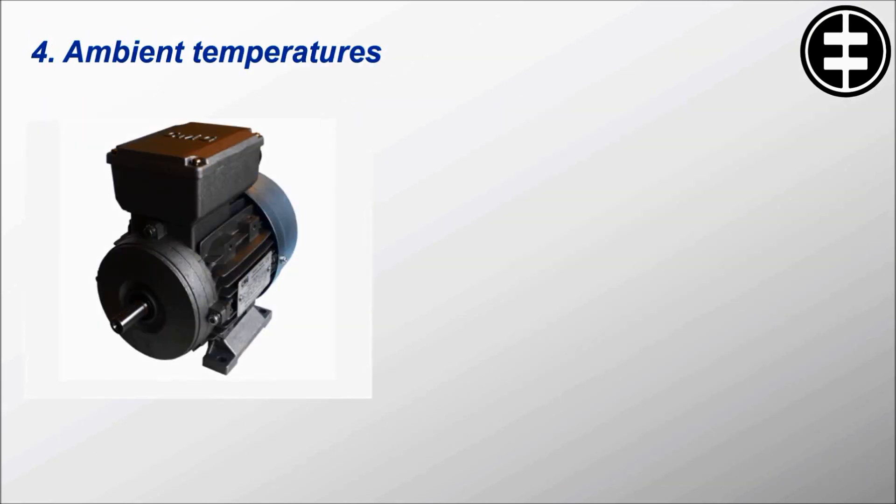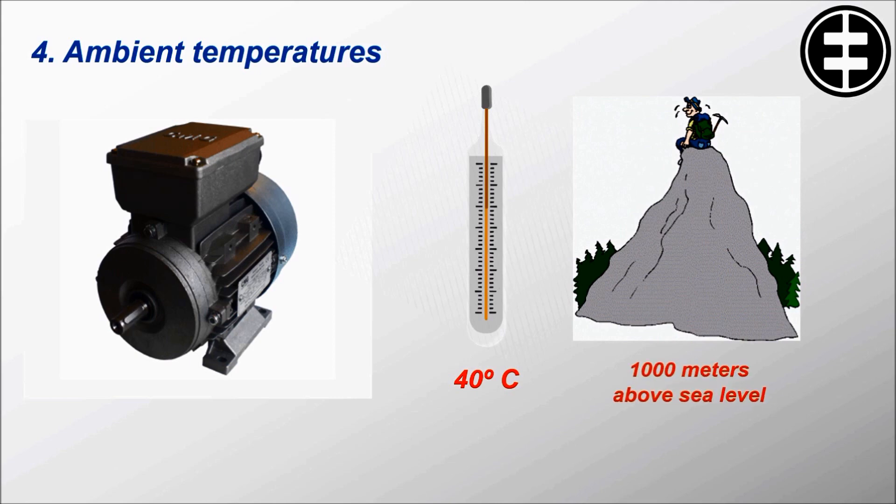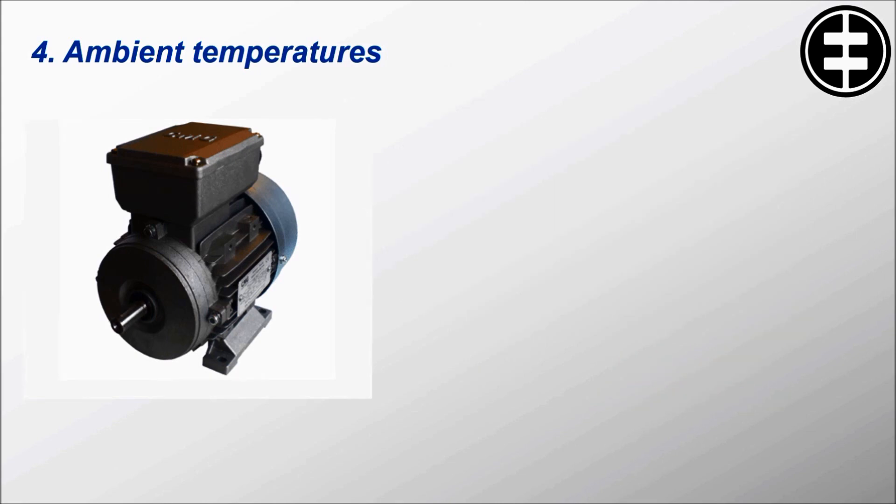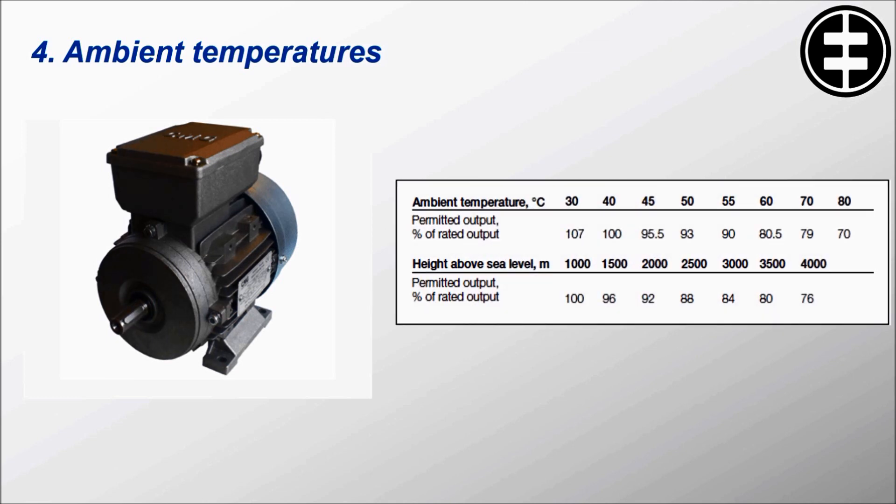Basic motors are designed for operation in a maximum ambient temperature environment of 40 degrees and at a maximum altitude of 1000 meters above sea level. If a motor is to be operated in higher ambient temperatures, it should normally be derated. As a guide, you can use this table.